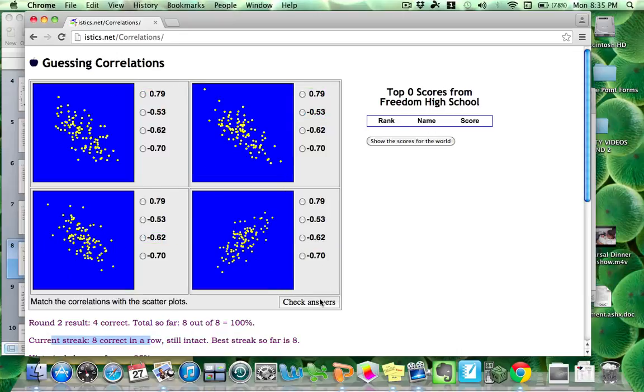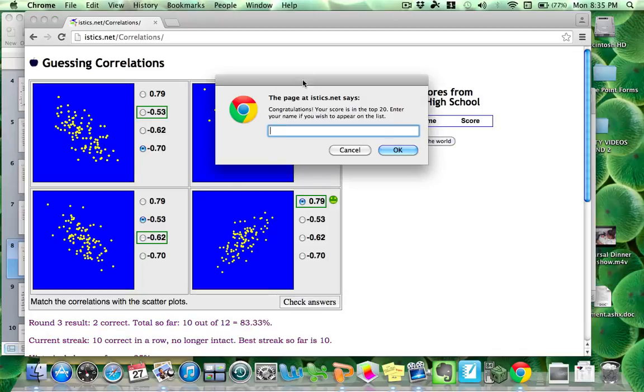Now on this next one I'm going to get one wrong on purpose. Or this looks a little tricky so it might not be on purpose. I know that the only positive one is the bottom right. So that's my .79. Of these other three I kind of think the bottom left looks the weakest to me. So I'm going to choose negative .53 here. This one's kind of tricky. I would say between these top two that the top right is the stronger one. So negative .7 and that this one is negative .62. This is what I think is correct. But I'm actually just going to change this one and get it wrong on purpose to show you what happens there. If I check answers, oh no I got it wrong. But it says congratulations your score is in the top 20. Enter your name if you wish to appear on the list.